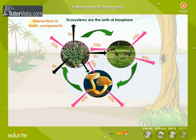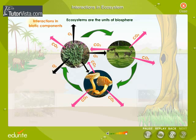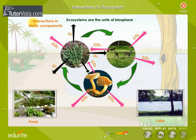Other interactions include plants depending on animals for pollination, dispersal of seeds, etc. How do the biotic components interact with abiotic components? This is very simple to understand.